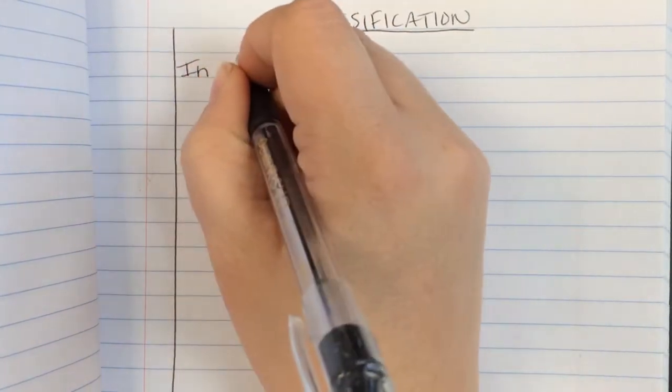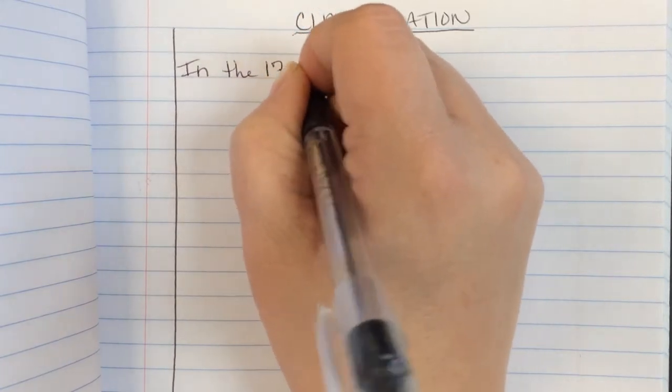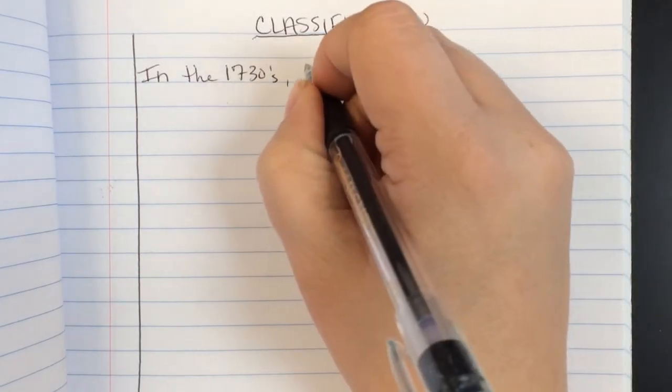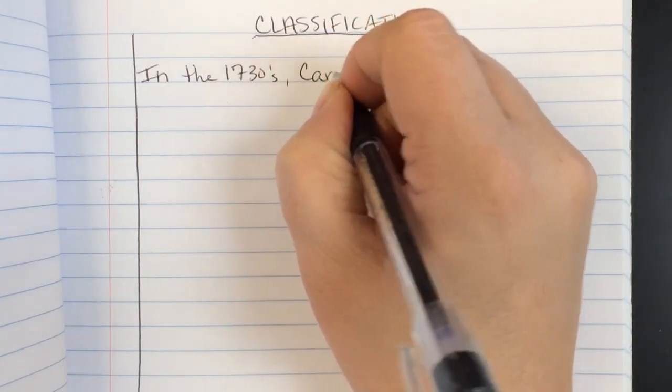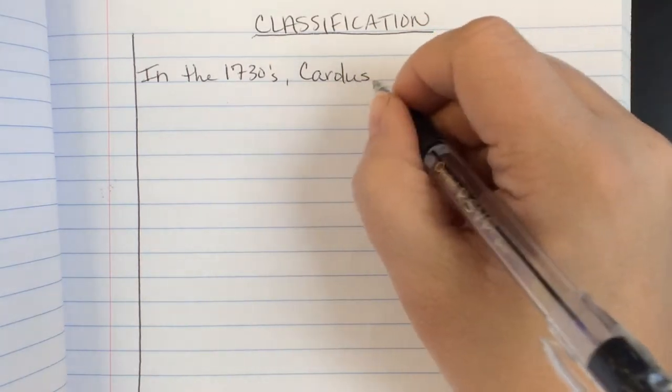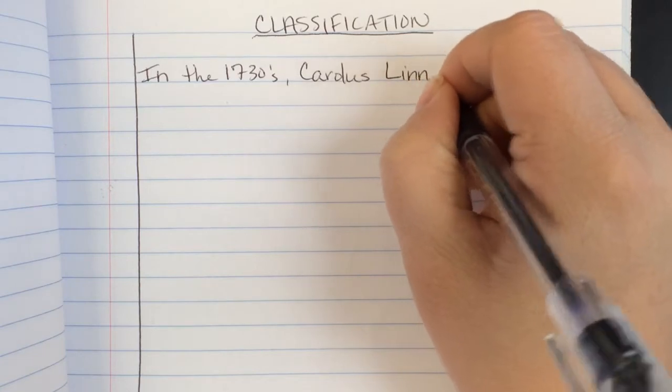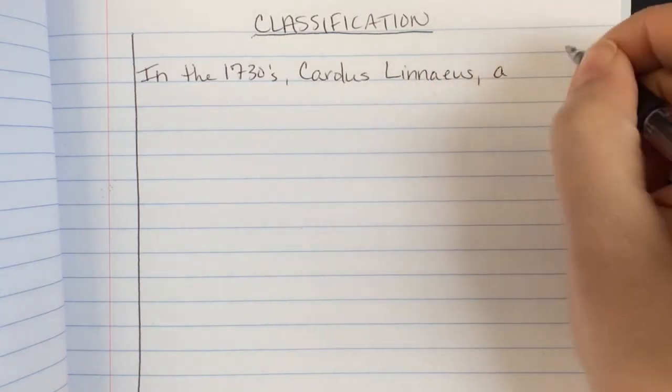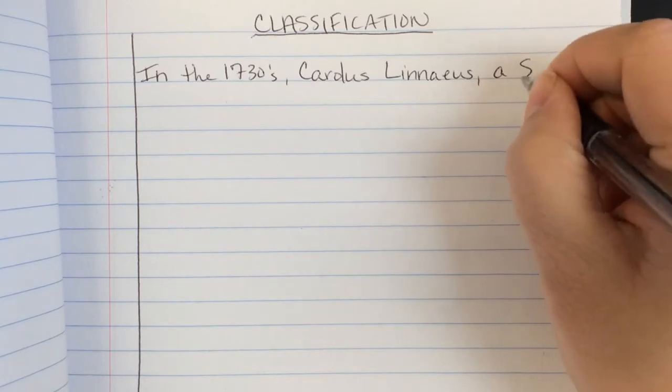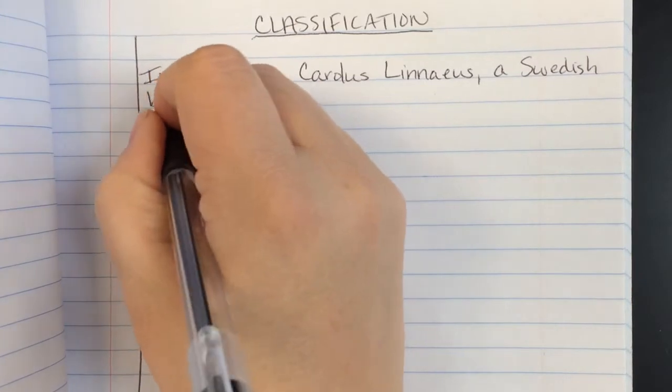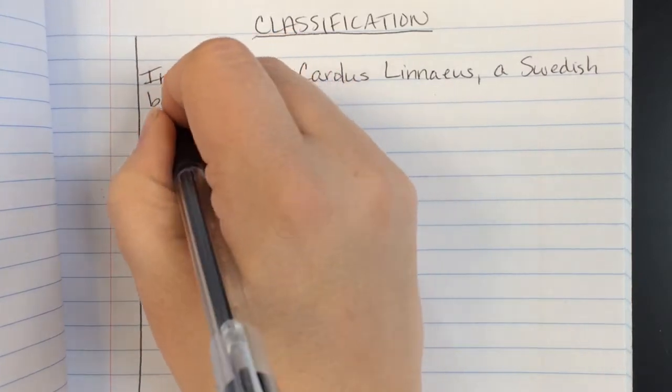Classification is actually the way that scientists organize organisms based upon many different factors. And all this started way back in the 1730s. Hard to think that people were thinking about this way back then. So, there was a guy whose name is Carolus Linnaeus. Carolus Linnaeus was a Swedish scientist. In fact, he was a botanist. And a botanist is somebody who studies plants.